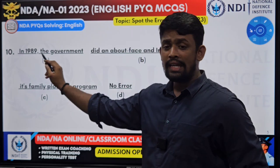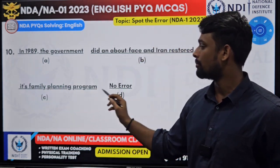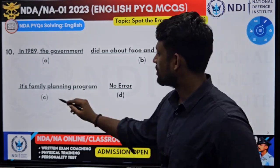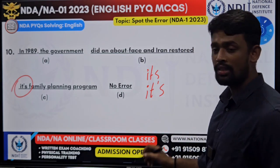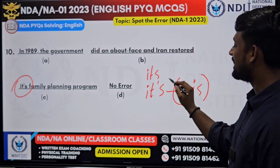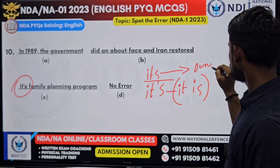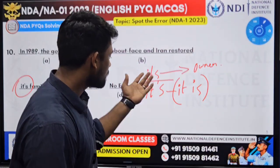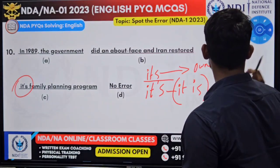Last question. In 1989, the government did an about-face and Iran restored its family planning program. There is something wrong with option C. When you know 'its' — 'its' is a possessive pronoun. Whereas 'it's' with an apostrophe gives you the meaning of 'it is'. So 'it's' means 'it is', while 'its' without an apostrophe shows ownership — for example, 'its author', 'it develops itself'. The pronoun plays a major role here.